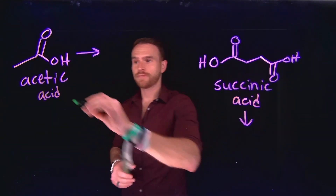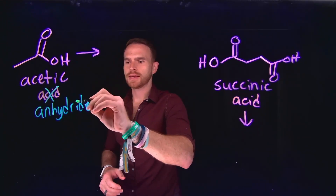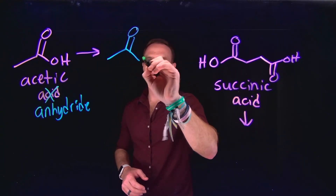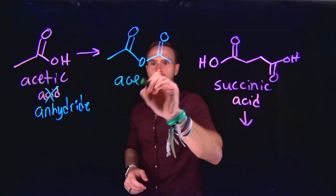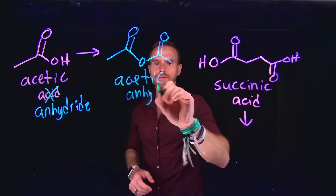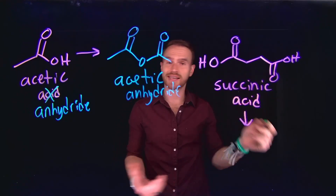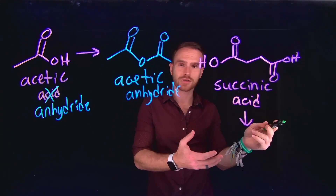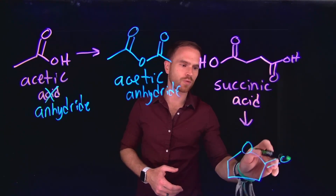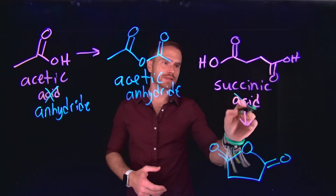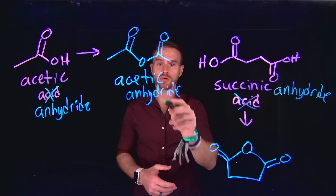Naming anhydrides is incredibly straightforward. In fact, you just change the ending from acid to anhydride. So if we draw the anhydride version of acetic acid, it is symmetrical on both sides, contains two carbonyl groups with an oxygen in the center, and its name becomes acetic anhydride. This can also be extended to carboxylic acids with common names like succinic acid, which contains two carbons between two identical carboxylic acids. The anhydride version of this is actually a five-membered ring with oxygen at the center, and this becomes succinic anhydride — we're just changing the acid name to anhydride.